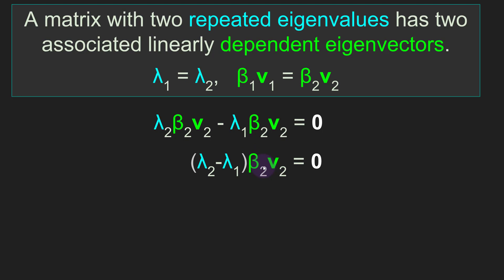Now we have a slightly different situation. Again we have three terms that equal the zero vector. We know that vector 2 is an eigenvector, so it cannot possibly be zero. Now the thing is we know for sure that this term is definitely zero because lambda 1 equals lambda 2, so lambda 2 minus lambda 1 equals zero. This means beta 2 could be zero or some nonzero value — there are really no constraints on beta. So the proof doesn't tell us anything about whether the eigenvectors corresponding to these two identical eigenvalues are the same or different. We need a different way to think about this.